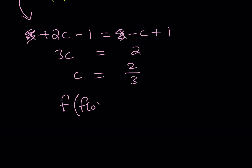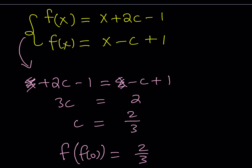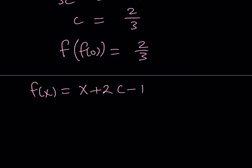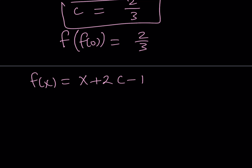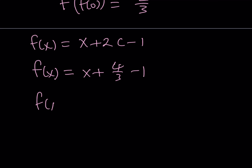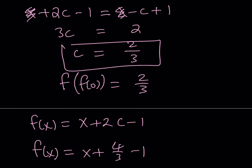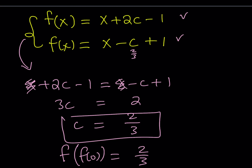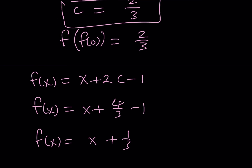We have our definitions for f of x, so let's substitute c equals 2 thirds. Using f of x equals x plus 2c minus 1, we get f of x equals x plus 2 times 2 thirds minus 1, which is x plus 4 thirds minus 1, giving f of x equals x plus 1 third. Using the other equation, x minus c plus 1 gives x minus 2 thirds plus 1, which is also x plus 1 third. Both definitions confirm f of x equals x plus 1 third.